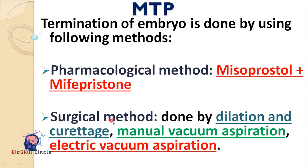These pills contain drugs which block the production and effect of progesterone and result in medical abortion. The second method is the surgical method. Dilation and curettage and manual vacuum aspiration are used. Electric vacuum aspiration needs less time to perform than dilation and curettage, while manual vacuum aspiration is associated with less pain than electric vacuum aspiration.